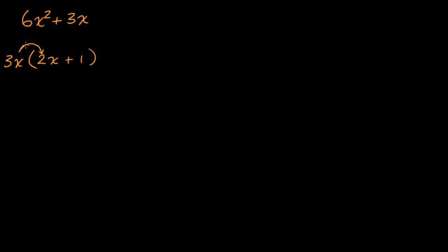3x times 2x is 6x². 3x times one is 3x. And that's all we would do. We would be done. That's all you can do to really factor that. And as we'll see, in this example, trying to factor out a common factor was all we had to do.